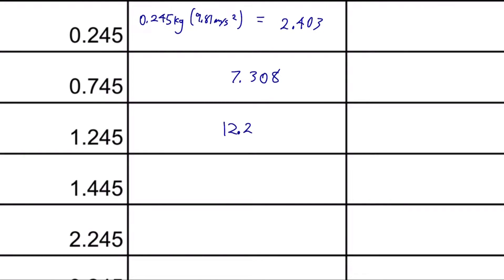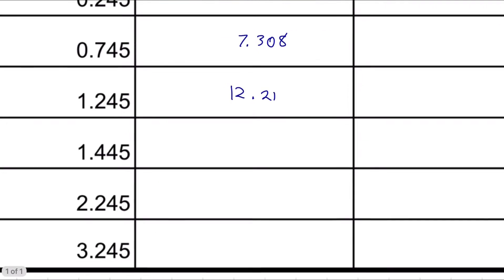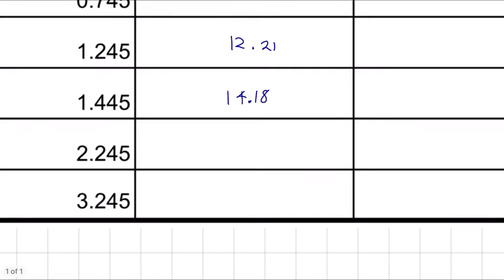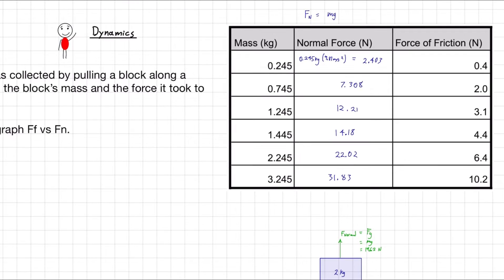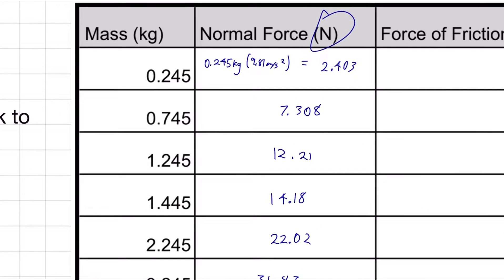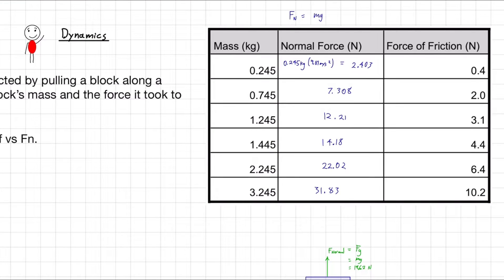I'm going to change the color to blue so we can see what I'm writing. I'm not going to be rewriting the formula. I'm just going to write the values we get when we plug it into our calculator. So 7.308. And I encourage you to try these along with me, type them into your calculator, get the practice, see if you can get the same answers. So 22.02, and 31.83. These are all in newtons. The units are given to us in the table.